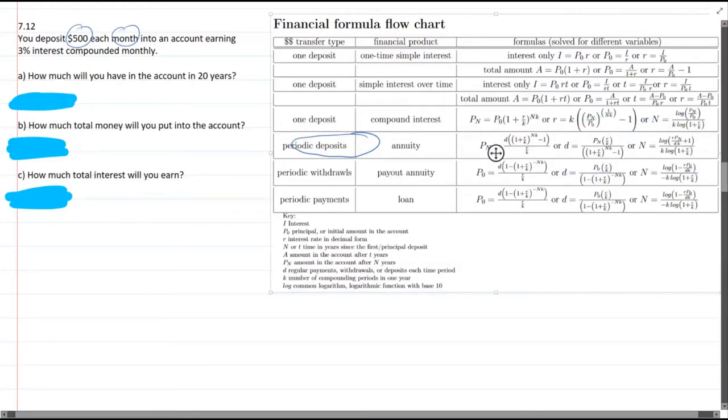And we want to know how much will you have in the account in 20 years. So that is find the final value, which is Pn. So I want the formula that's solved for Pn, which will be this first one. So we'll start by writing that formula. It's this one right here. So it's D times 1 plus R over K to the NK minus 1 divided by R over K.